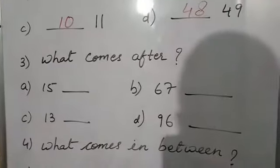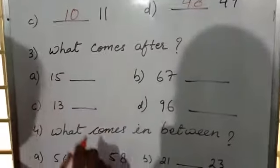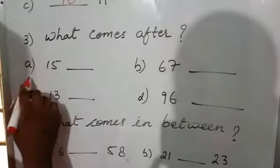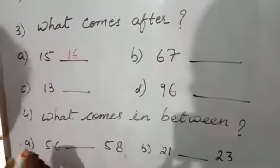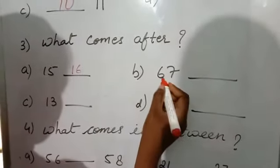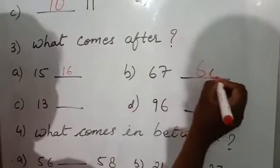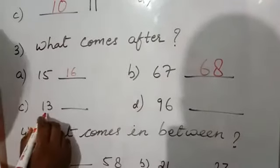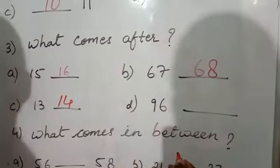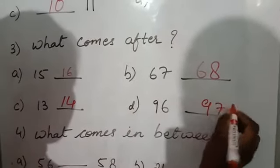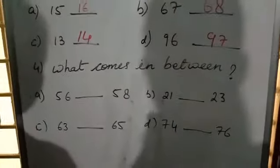Next one is question number 3 on page number 25: what comes after? Number A: which number will come after 15? 16. Next number is 67. Which number will come after 67? 68. Then, which number will come after 13? That is 14. After 96? 97. Rest, you will do in your rough copy.